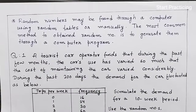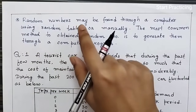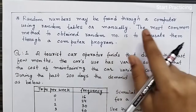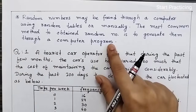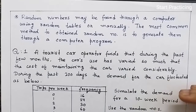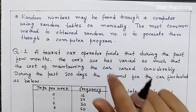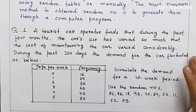Now we will solve question number 1. Random numbers may be found through a computer, using random tables, or manually. The most common method to obtain random numbers is to generate them through a computer program. So if this question comes in MCQs, the answer is: the most common method to generate random numbers is a computer program.